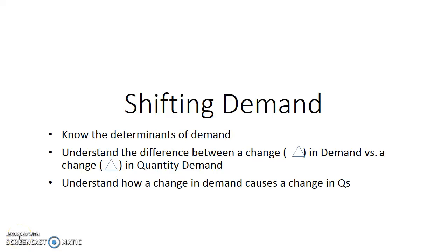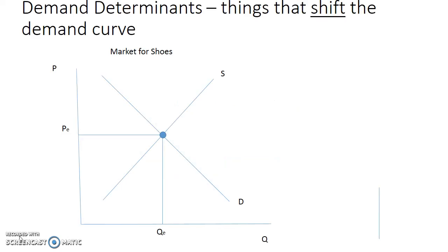In this screencast, we are going to talk about shifting the demand curve. You will know the determinants of demand — there are five of them. You'll understand the difference between a change in demand versus a change in quantity demanded, and you'll also understand how a change in demand causes a change in quantity supplied.